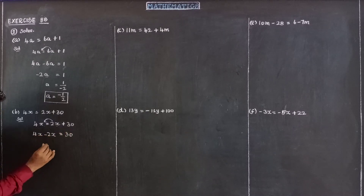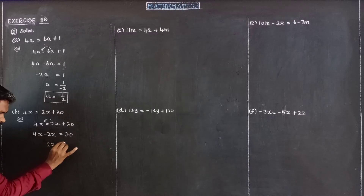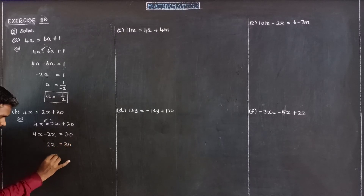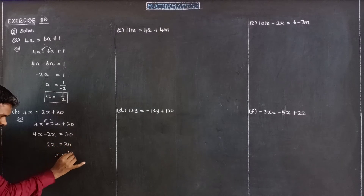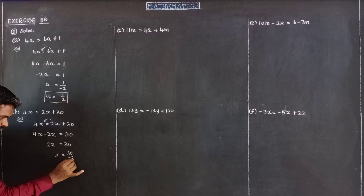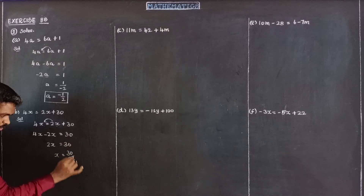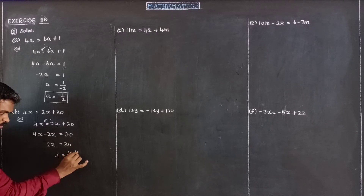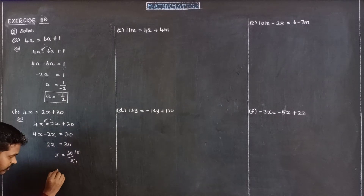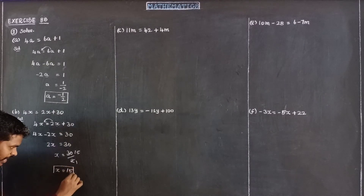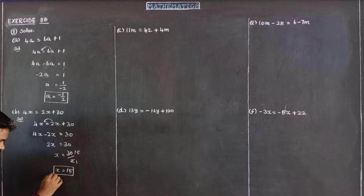4X minus 2X gives 2X, so 2X is equal to 30. To find the value of X, we divide both sides by 2. 30 divided by 2 is 15. Therefore the value of X is equal to 15.